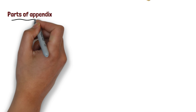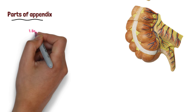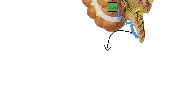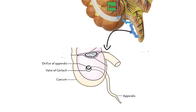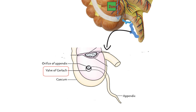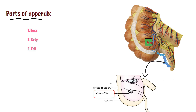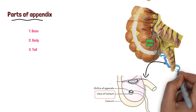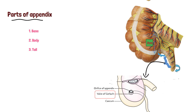Before discussing blood supply, let's talk about the parts of the appendix. There are three parts: the base, body, and tip. The base is attached to the posterior middle wall of the cecum, about 2 cm below the ileocecal junction. The body is narrow and tubular, containing a canal that opens into the cecum, guarded by an incomplete mucus fold called the valve of Gerlach. The tip is the least vascular part and is directed in various directions because it is free.